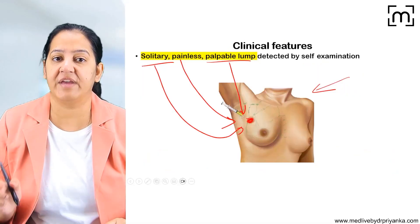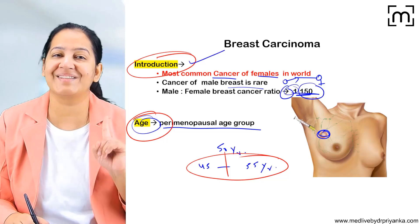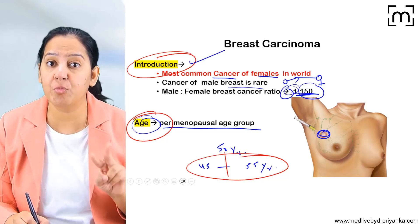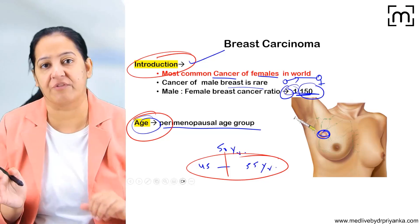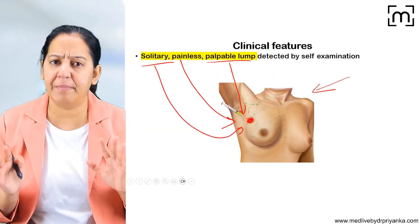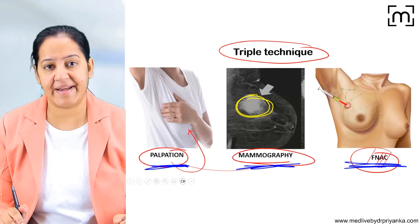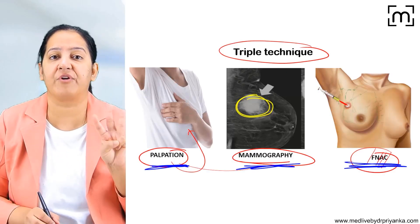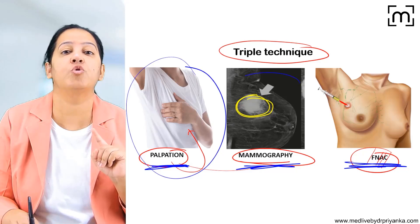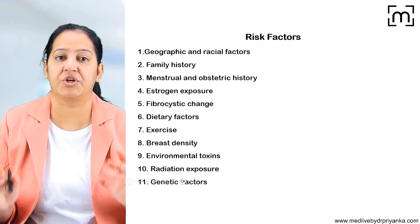So what is the triple technique? In the triple technique, three things are there: number one, palpation; number two, mammography; number three, FNAC — Fine Needle Aspiration Cytology. To summarize: breast carcinoma is the most common cancer of females in the world; age of presentation is perimenopausal; clinical feature is a painless, solitary palpable lump in the female breast; and the triple technique consists of self-palpation, mammography, and FNAC.